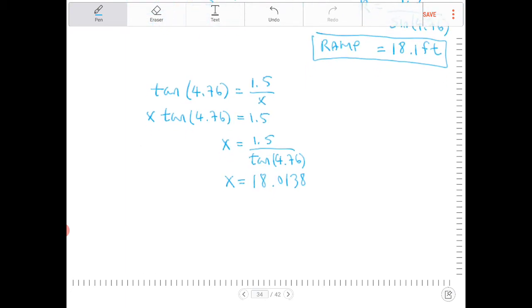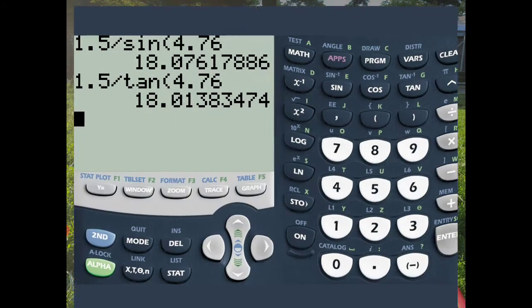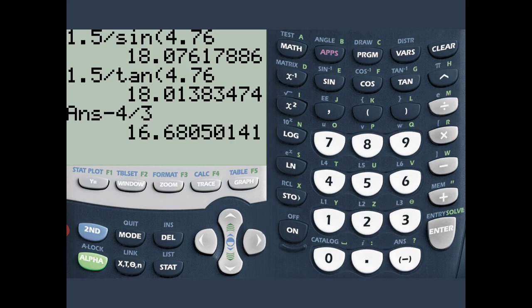Since d plus 1 and 1/3 is equal to 18.0138, I'm going to subtract both sides by 1 and 1/3. So if I do that, subtract that answer by 1 and 1/3 or 4/3, and that's going to be 16.68, or to the nearest tenth is going to be 16.7 feet.